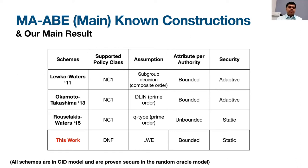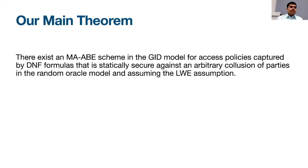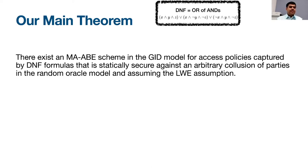Our main result is as follows: we have shown there exists a multi-authority ABE scheme in the GID model for access policies represented as DNFs, secure against arbitrary collusion of parties in the random oracle model assuming the LWE assumption. DNFs, as we know, are the OR of ANDs. The LWE assumption required for this work is the sub-exponential modulus-to-noise ratio.